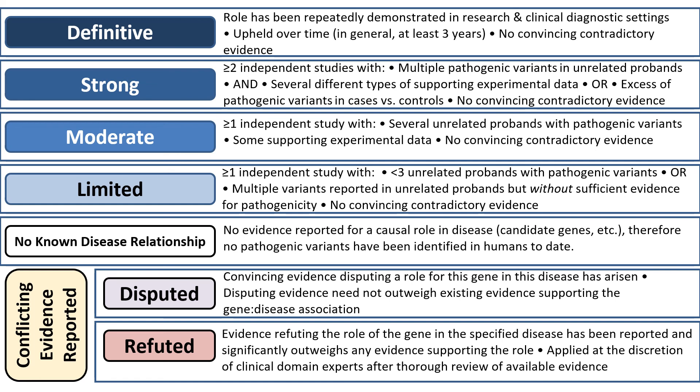For example, a definitive gene disease association does not imply that variation in that gene confers 100% penetrance of the phenotype. Please note that for the four classifications filled in blue, no valid conflicting evidence can exist. The ClinGen gene disease validity classifications shown here are published in the 2017 article in American Journal of Human Genetics and are also available on our website, www.clinicalgenome.org.